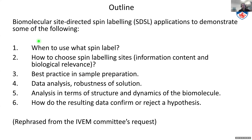The first question is when to use what kind of label, and how to choose spin labeling sites — both to get the information you want and to avoid disturbing the function of the system being labeled. We always get asked: how can we make sure the perturbed system is still relevant for the system we want to know about? I'll also cover sample preparation, data analysis in terms of structure and dynamics, and how resulting data can confirm or reject a hypothesis.